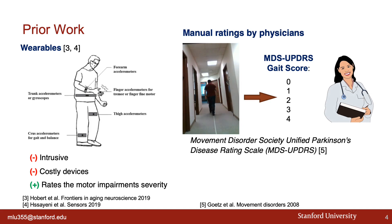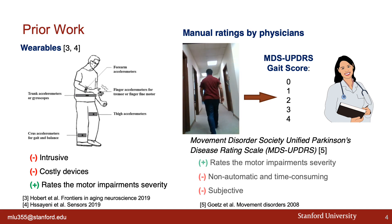Alternatively, physicians use MDS-UPDRS, a widely used clinical rating scale, which evaluates various aspects of Parkinson's disease, including motor complications. The MDS-UPDRS gait scale takes videos of subjects walking and evaluates them by severity. However, manual ratings from physicians on this scale are non-automatic and time-consuming, and scores are subjective.